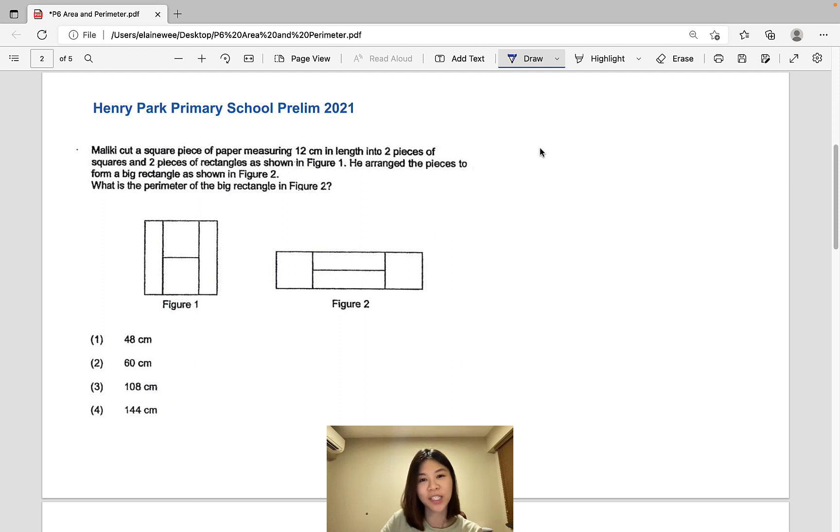Let's look at the next question taken from Henry Park Primary School. Maliki cut a square piece of paper measuring 12 cm in length into 2 pieces of squares and 2 pieces of rectangles as shown in figure 1. He arranged the pieces to form a big rectangle as shown in figure 2. What is the perimeter of the big rectangle in figure 2?